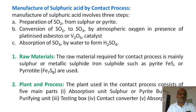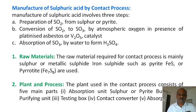The raw material required by the contact process is mainly sulfur powder or some types of metallic sulfides — zinc sulfide, iron sulfide — as well as different types of metal sulfides used for the manufacturing of sulfuric acid. The pyrites which is to be used is very hard in nature. There are also different types of steps involved in the manufacturing of sulfuric acid.